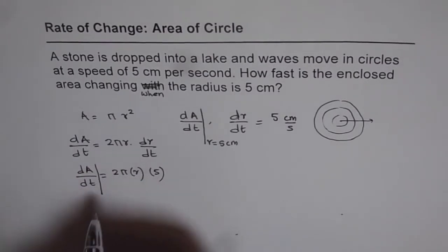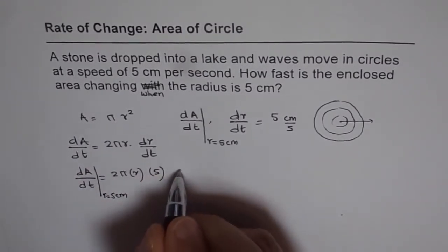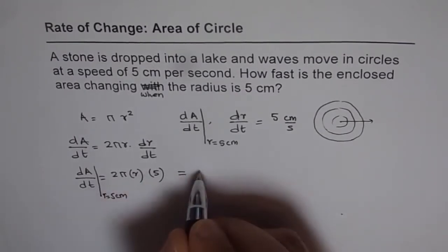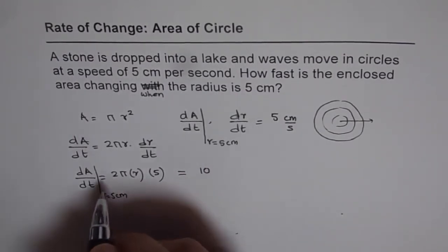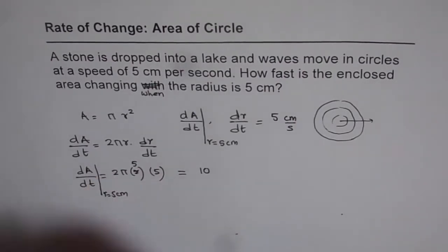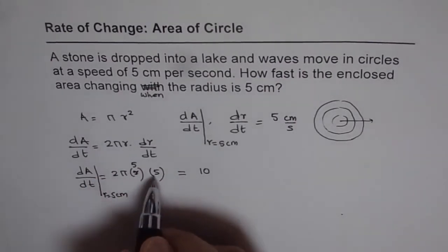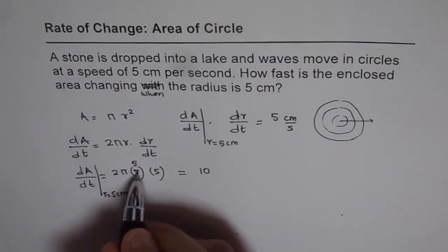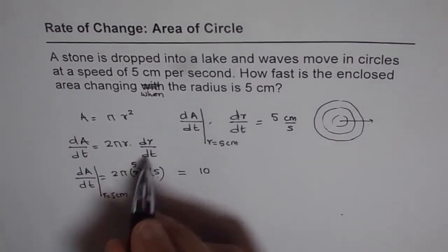So we get dA/dt equals 2πr is 5 and dr/dt at that instance of time is also 5. So I have to put r=5 here also. 2πr dr/dt - this 5 is for r and this 5 is for dr/dt.